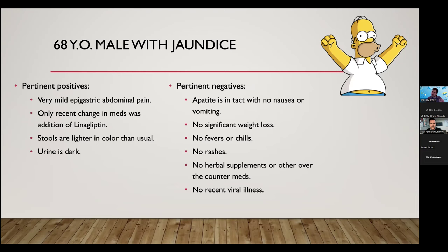The pertinent positives: he has very mild epigastric abdominal pain, rated one to two out of ten, not really fluctuating and not causing many symptoms. The only recent change in his medications was the addition of linagliptin about a month ago for his diabetes. His stools are lighter in color than usual but not profoundly — not clay colored. His urine is dark. Pertinent negatives: his appetite is totally intact, no nausea, no vomiting, no significant weight loss, no fevers or chills, no rashes, no new herbal supplements or over-the-counter meds, no recent viral illnesses. Review of systems for shortness of breath was negative.